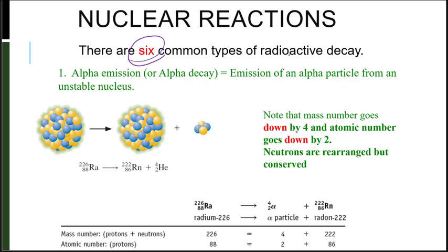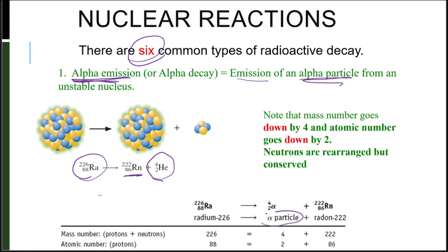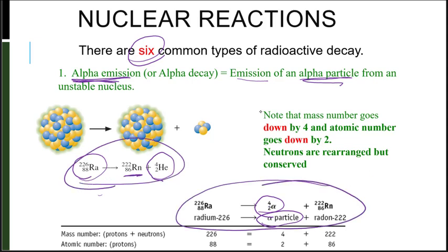There are six common types of radioactive decay. First, let's look at alpha emission or alpha decay, which is the emission of an alpha particle from an unstable nucleus. Here's an example: radium-226 is decomposing to radon-222, and it is also emitting an alpha particle. That can be written as helium or as an alpha particle — these are the same two reactions. Note that the mass number goes down by 4, from 226 to 222, and the atomic number goes down by 2, from 88 to 86.